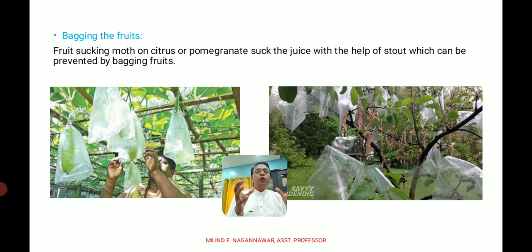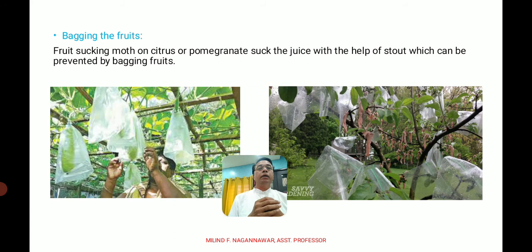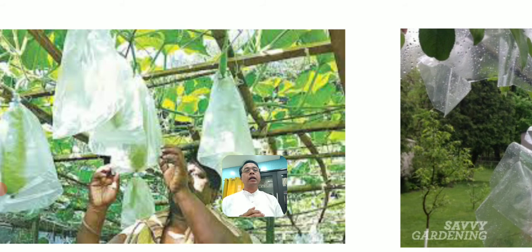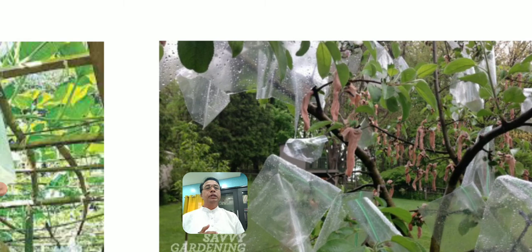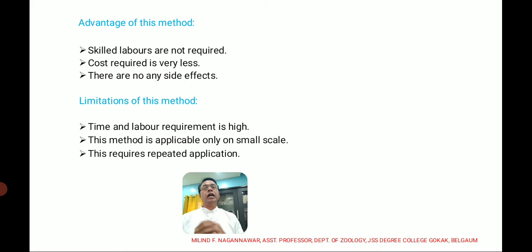Bagging of fruits is another technique. Most fruits are affected by many insects such as fruit flies and fruit-sucking moths. These insects can be avoided by bagging the fruits — covering them so they are protected and cannot be attacked by worms or insects.